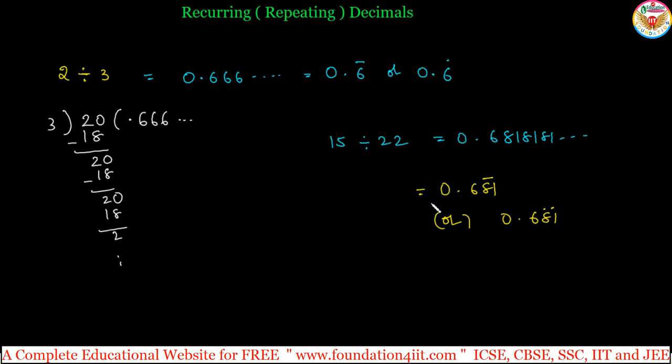Now, conversions. Let us see how to convert this type of repeating decimals into fractions or vulgar fractions, that means numerator by denominator. We have two types: one is a pure recurring decimal, and another is a mixed recurring decimal.